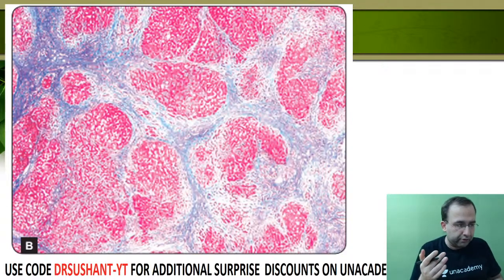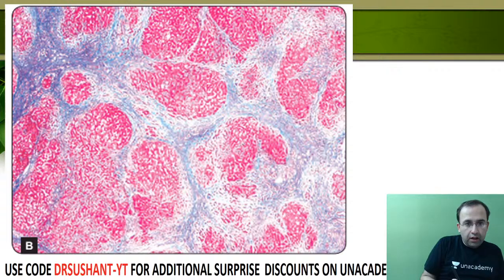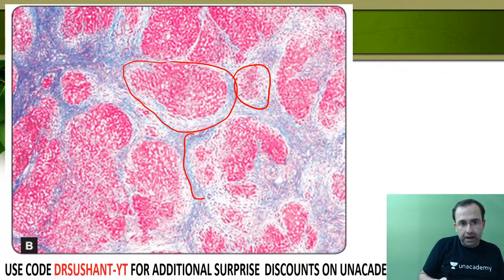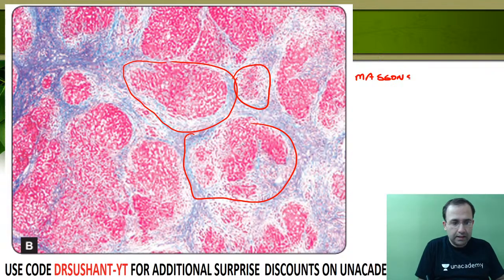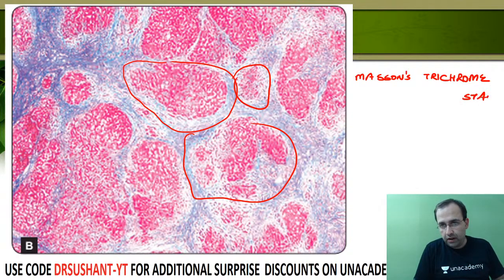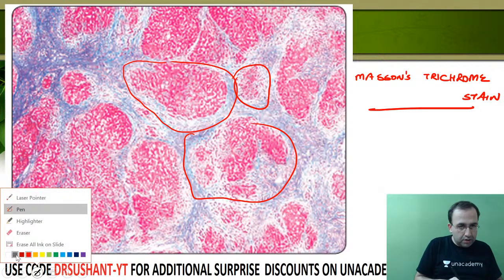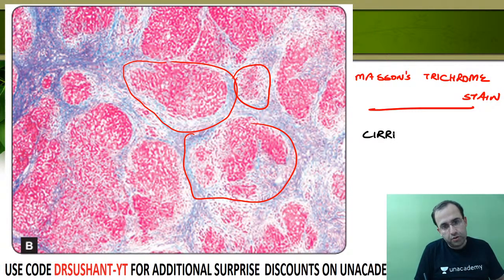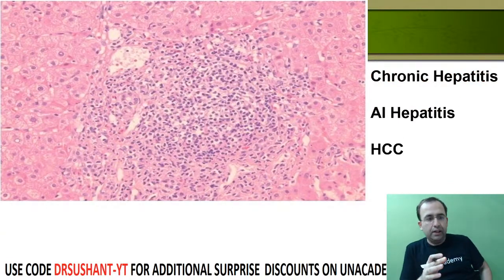Next diagnosis: a liver biopsy showing a bluish-green color — this is Masson's trichrome stain, in which collagen is blue-green. It shows extensive bridging fibrosis with hepatic nodule formation — diagnosis is cirrhosis.